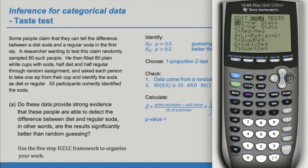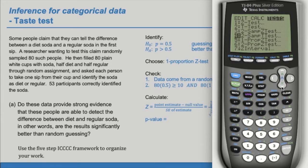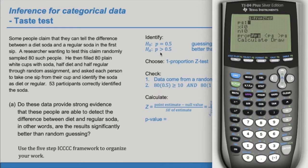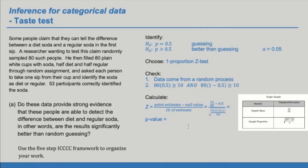So go to stat, tests, one prop z-test, P sub 0 would be 0.5. X is an integer. It's how many yeses. So in this case, 53 people got it correct. If we were given a decimal or a percent, we would have to multiply that by N. 80 and our alternate hypothesis is greater than calculate. So the z-score turned out to be 2.9 and the p-value is 0.002 rounded. So here we are.